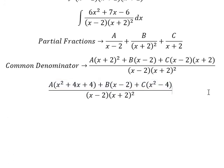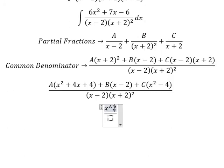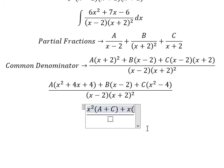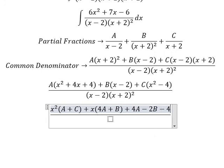Now we arrange based on the powers of x. For x squared we have A plus C. For x we have 4A plus B. For the constant term we have 4A minus 2B minus 4C.